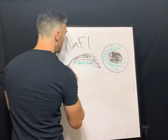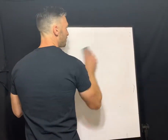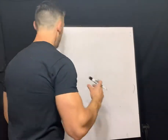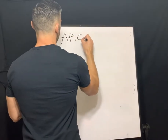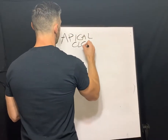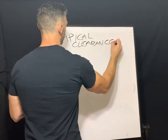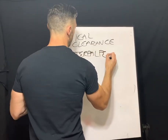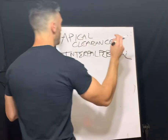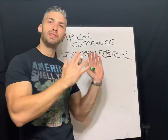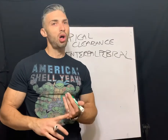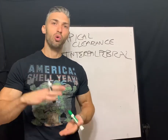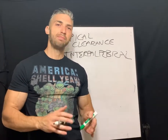The first type of gas permeable fitting philosophy is apical clearance, also known as the interpalpebral fit. With this fitting philosophy, you're going to use a smaller diameter lens — about eight to nine millimeters — and you're going to fit these slightly steeper than K. In general, you start about a half a diopter steeper than K.